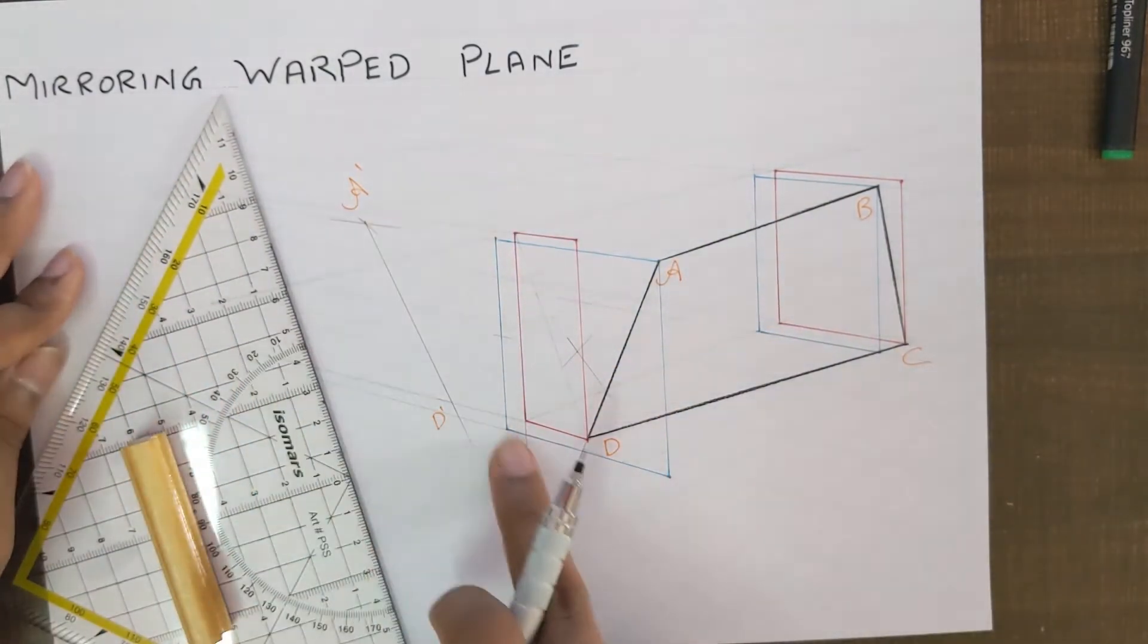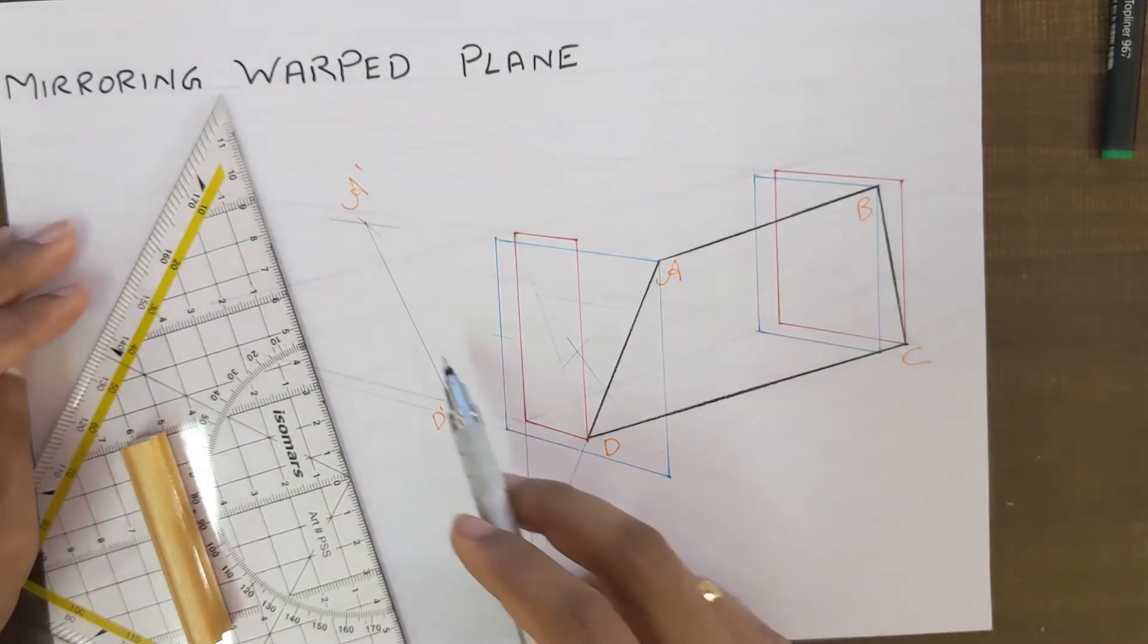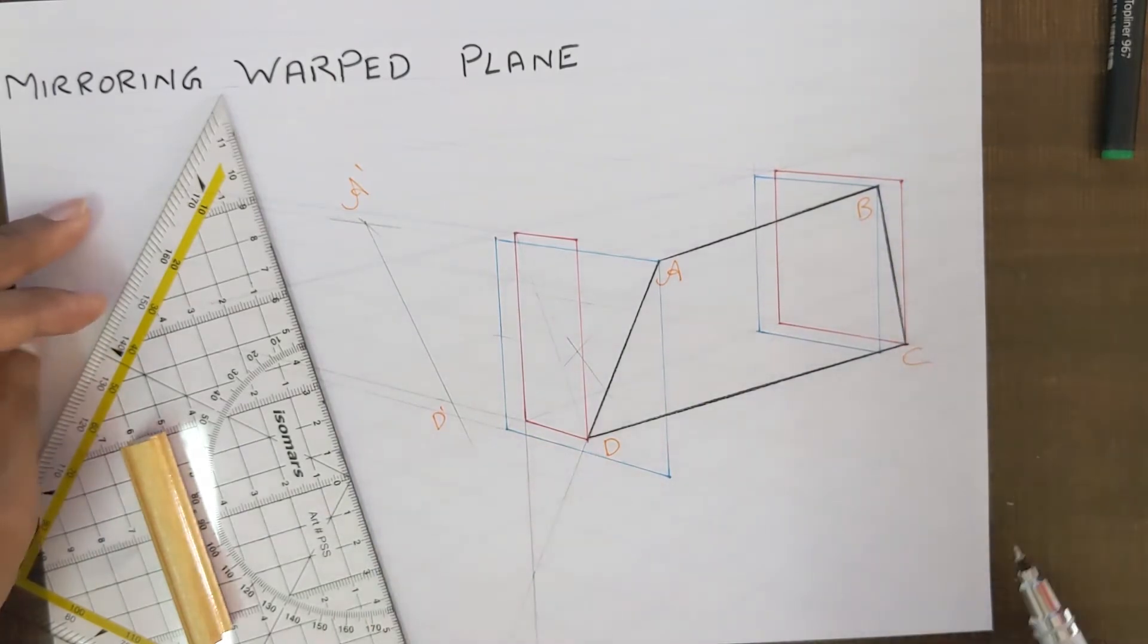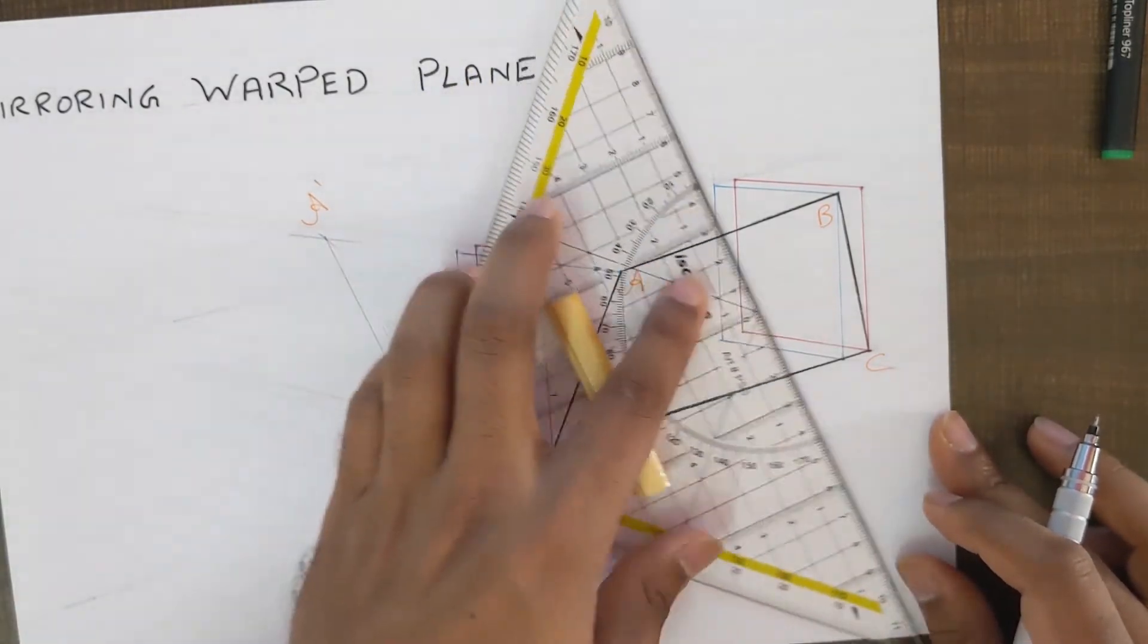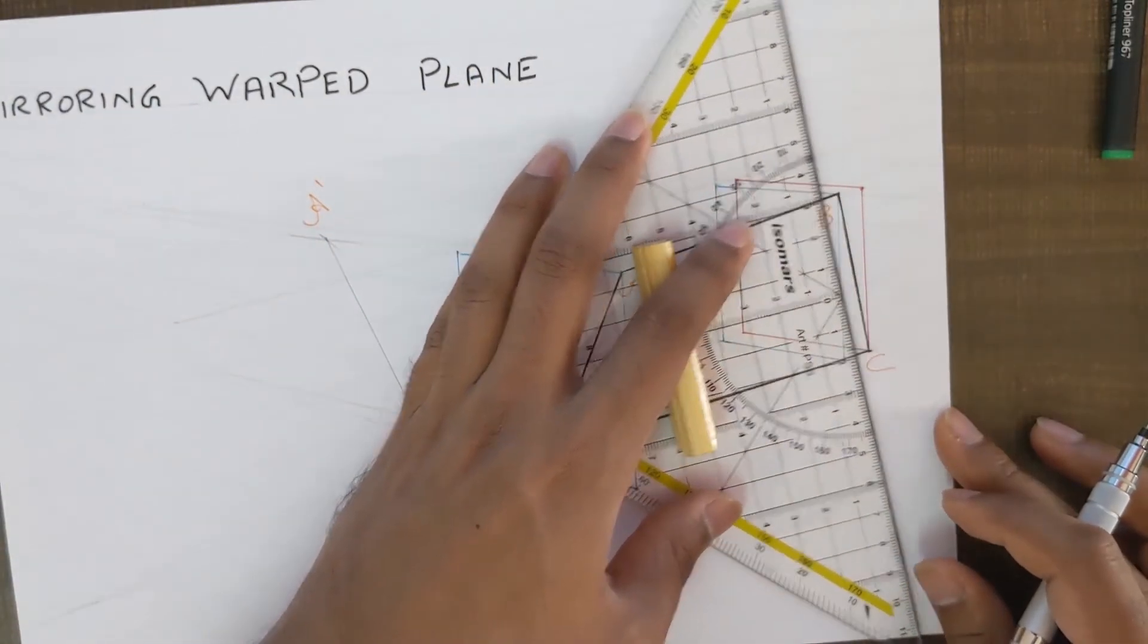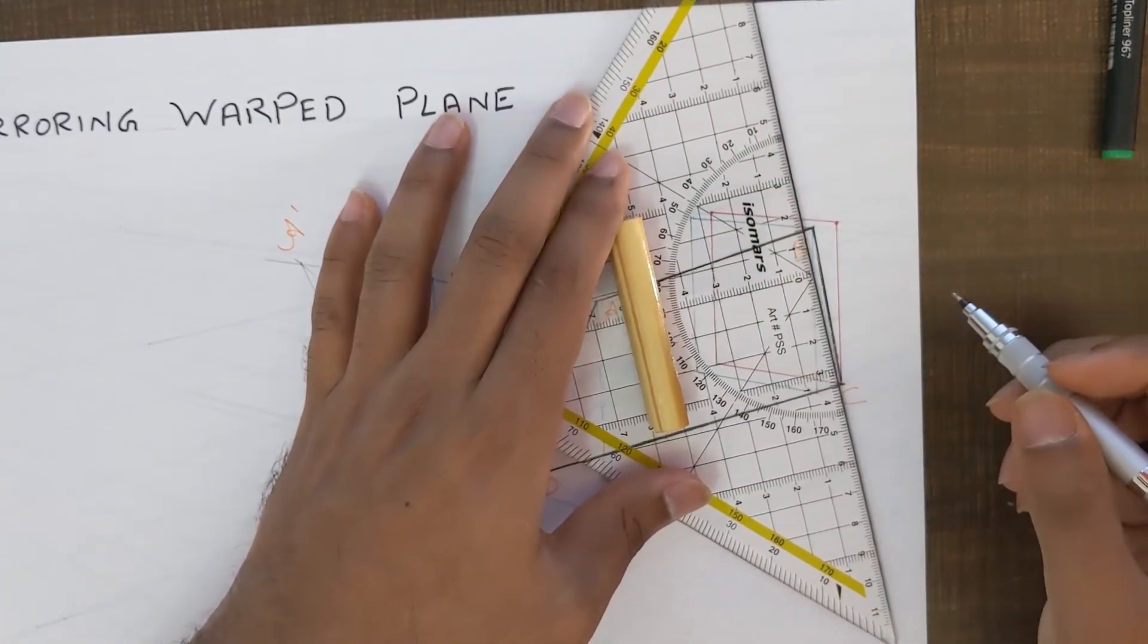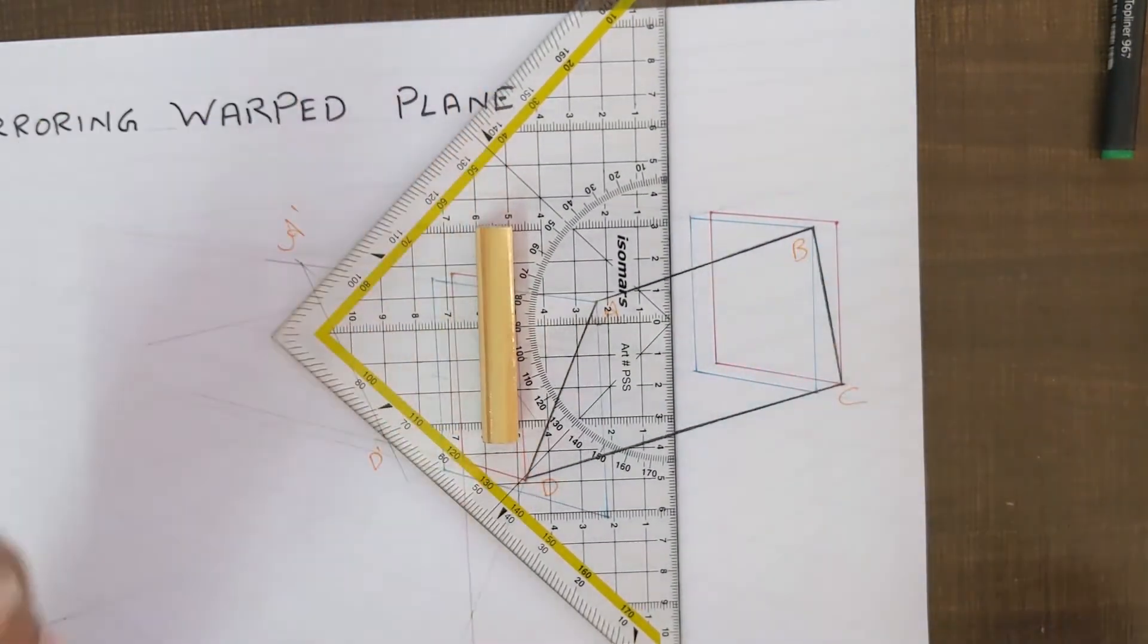Okay, so now we have the front edge of our warp plane. Now we have to repeat the same procedure for the points B and C as well. So let's go ahead and do it. We can do two things over here. Since there is no way that the line B C intersects with our vertical, that is out of question.